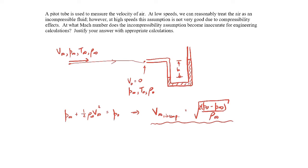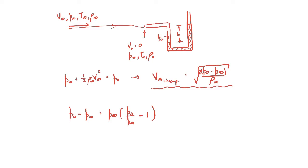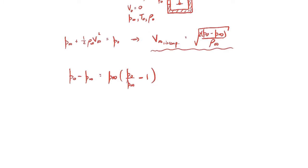Now let's do the same thing assuming we have some compressibility. We'll assume the flow comes to rest from the far upstream conditions to stagnation conditions isentropically. So we start with the difference between the stagnation pressure and the pressure far upstream, and rewrite it as a ratio P₀/P∞. The reason is that we have an isentropic expression for that ratio P₀ over P-infinity.